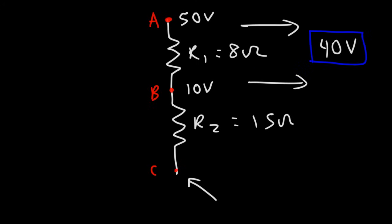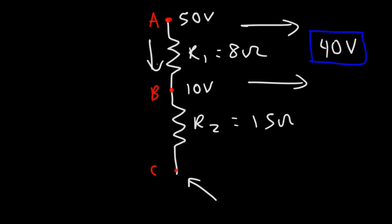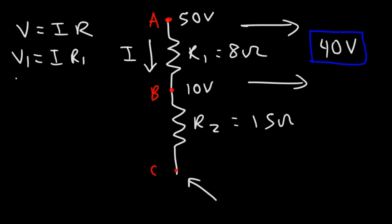To calculate the voltage drop across R2 we need to determine the current flowing through it. Since there's only one path for current to flow, these two resistors are in series, so we calculate the current through R1 using Ohm's law: V equals IR. V1 is 40 volts and R1 is 8 ohms. Dividing both sides by 8, the current is 5 amps.